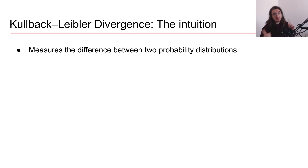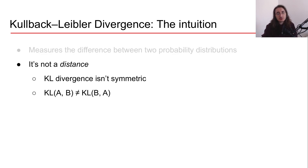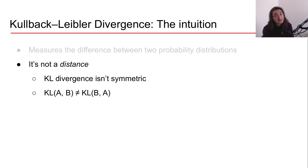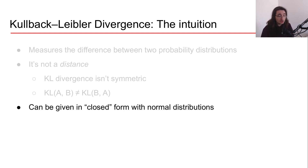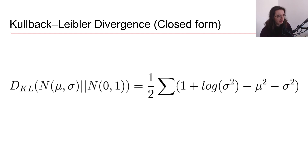The Kullback-Leibler divergence measures the difference between two probability distributions. You may think it's some sort of distance, but it's not precisely a distance from a mathematical point of view, because in order to have a distance we need that construct to be symmetric. Take the Euclidean distance — the Euclidean distance between point A and point B is the same as that of point B and point A. Unfortunately, the Kullback-Leibler divergence doesn't enforce that symmetry; KL(A‖B) can differ from KL(B‖A). We're going to use the so-called closed form, which can be used for normal distributions.